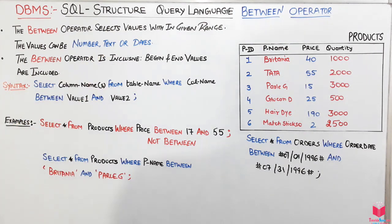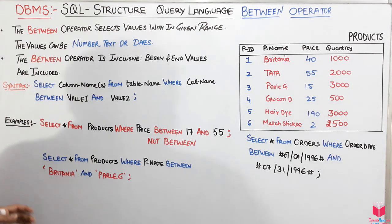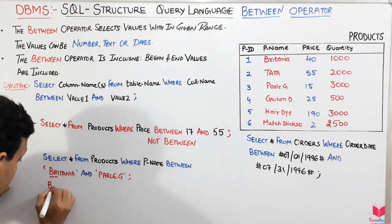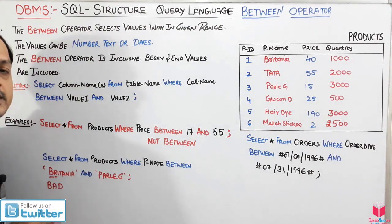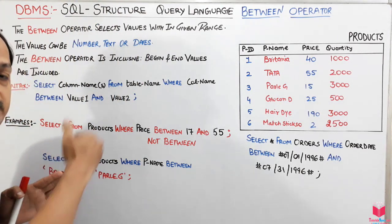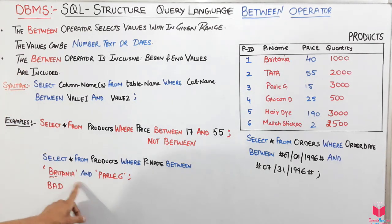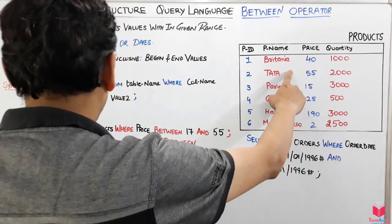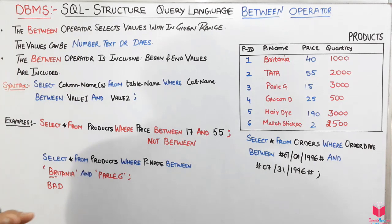For a text-based example: SELECT * FROM products WHERE p_name BETWEEN 'Britannia' AND 'Parle-G'. Britannia starts with 'B' followed by 'R', so values alphabetically before that range won't be included. It checks all values between these two alphabetically — so Britannia, Parle-G, Gold, Candy, Die, and Mastico would be considered.